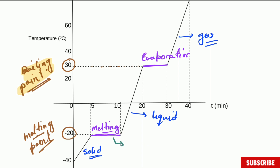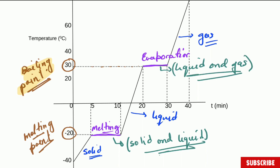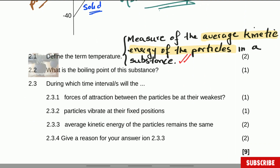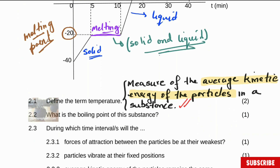During melting, the state of matter will be both solid and liquid. During evaporation, you will have both liquid and gas. This question asked what is the boiling point of the substance — that is 30 degrees Celsius, and that is what you have to answer. You will get one mark for that.